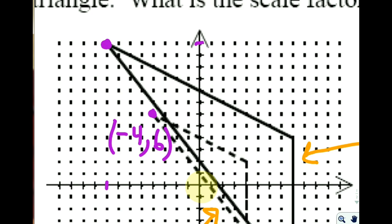One, two, three, four, five, six, seven, eight. So we're back eight. And then we are up two, three, four, five, six, seven, eight, nine, ten, eleven, twelve.